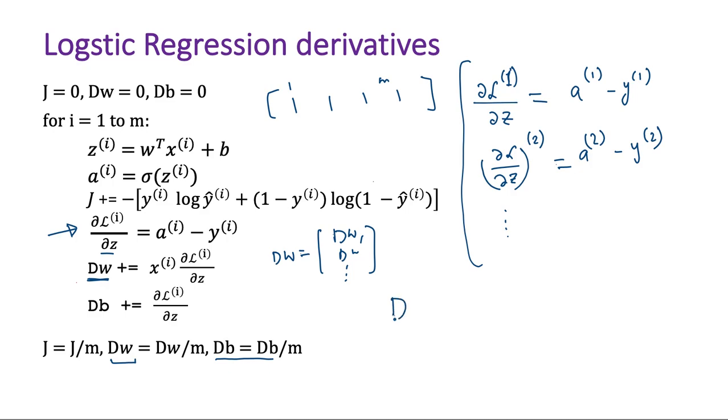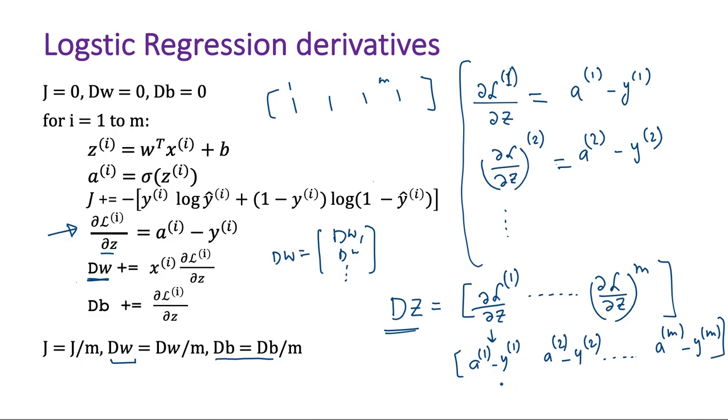So we will do the same with this. So let's define a vector dZ equal to ∂L_1/∂z, and all the way up to ∂L_m/∂z. So we have defined a row vector for this dZ. And what is this? This is a_1 minus y_1. Second term would be a_2 minus y_2. And all the way up to a_m minus y_m. So you see that this can be broken down into a_1, a_2, all the way up to a_m minus y_1, y_2, all the way up to y_m.